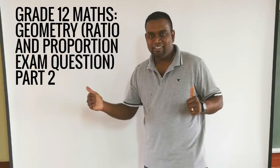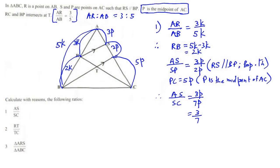Hi guys, we're back with part 2 of this video and hopefully we can finish this question. And if you remember in part 1 we showed that AS over SC is equal to 3 over 7.